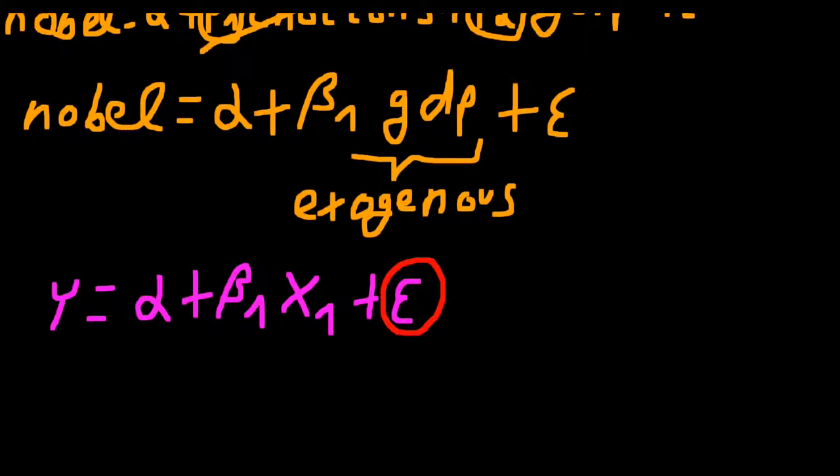And this is problematic because we assume that our explanatory variables are not correlated with our error term. So the problematic part is the correlation between x1 and the error term.